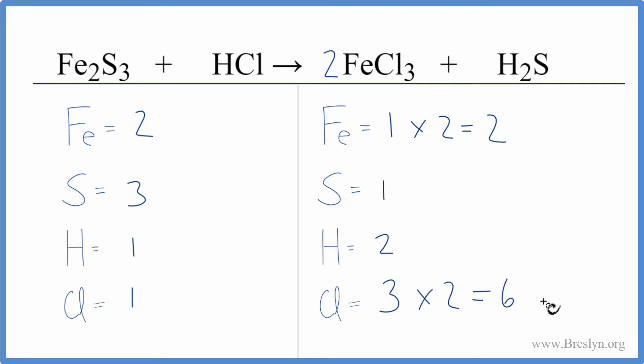We could put a 3 in front of the H₂S. That would give us 1 times 3, three sulfur atoms, and then hydrogen, we now have 2 times 3, so six hydrogen atoms.